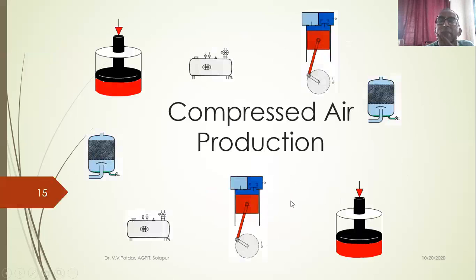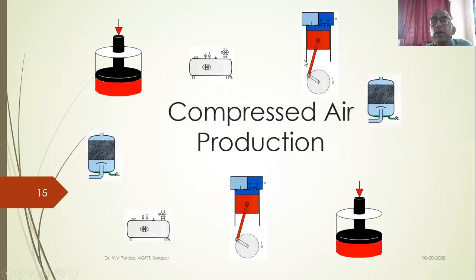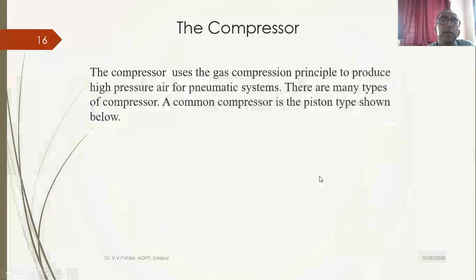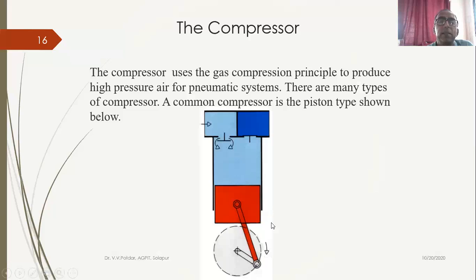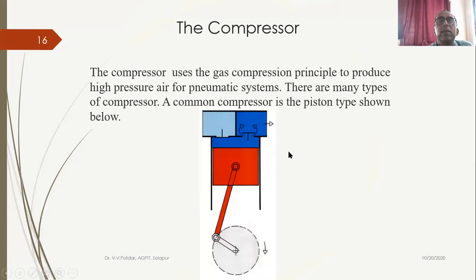For compressed air production, as seen in the first slide, the air receiver has a pressure gauge, a temperature gauge, and a safety relief valve to safeguard the pressure vessel. There is a valve for taking compressed air to the application, and a drain for removing trapped water or for maintenance. The compressor — reciprocating type — has a filter at inlet. The compressor uses the gas compression principle to produce high-pressure air for the pneumatic system. A common compressor is the piston type.